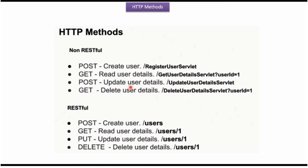In case of updating the user details we have to use POST method, and in the body of the request we have to specify the user name, email, age, and the user ID which we want to update. Here is the URI: update user details servlet. In case of deleting user details we have to use GET method, and here you can see the URI: delete user details servlet, with the user ID specified in the query parameter.